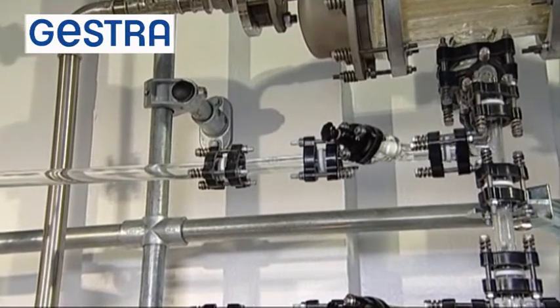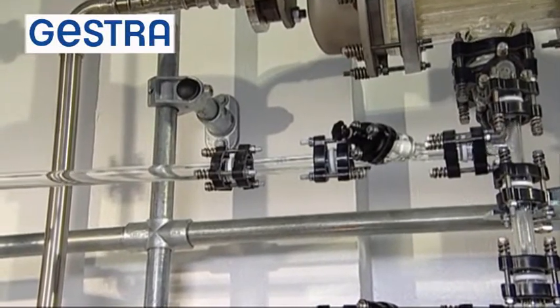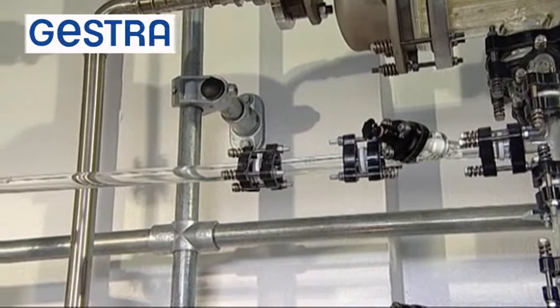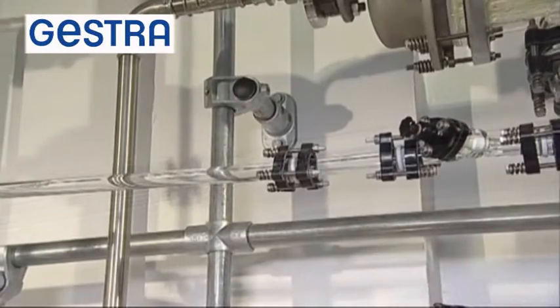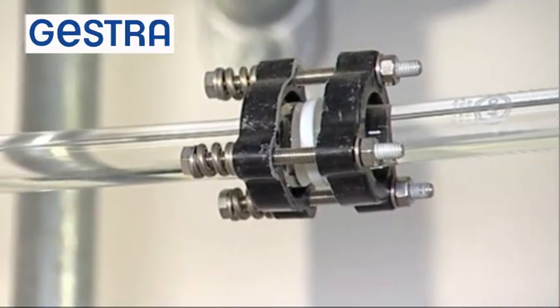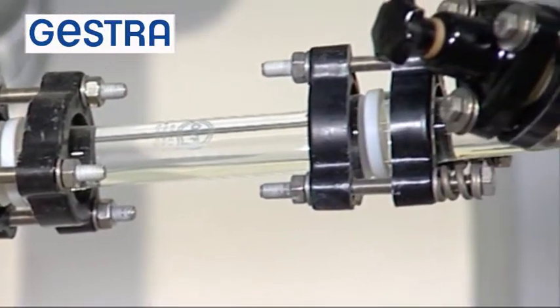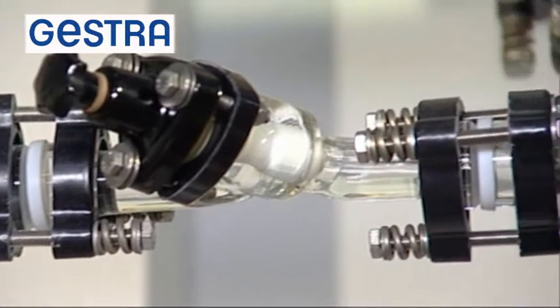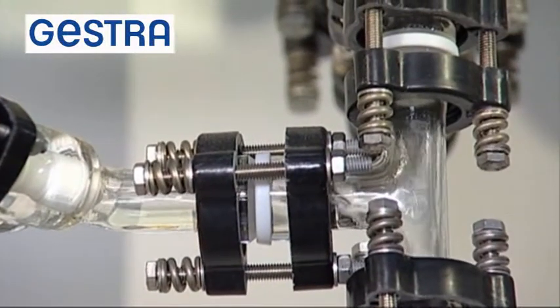For this, steam is introduced into a horizontal glass tube with a slight upward inclination, thus forming a pocket of water. The water enclosed in the tube on the left-hand side is cold, whereas steam is available on the right-hand side. This represents a typical start-up situation for pipe segments with poor drainage.